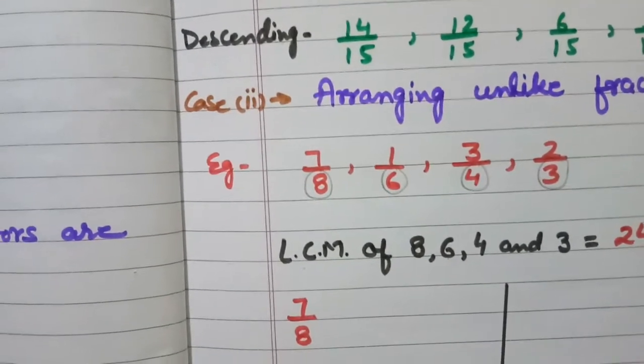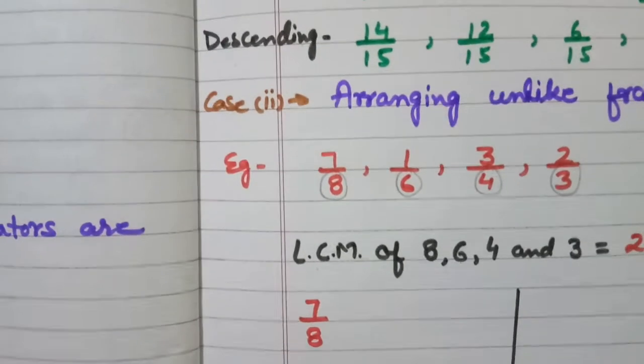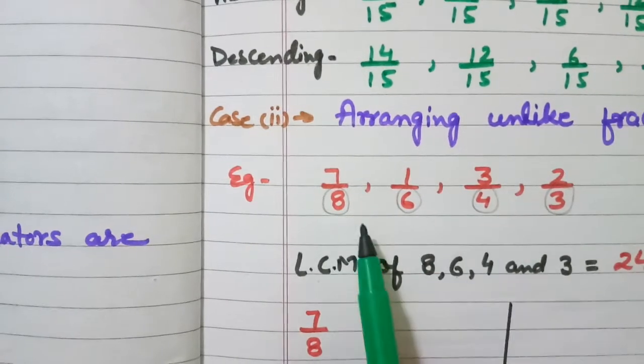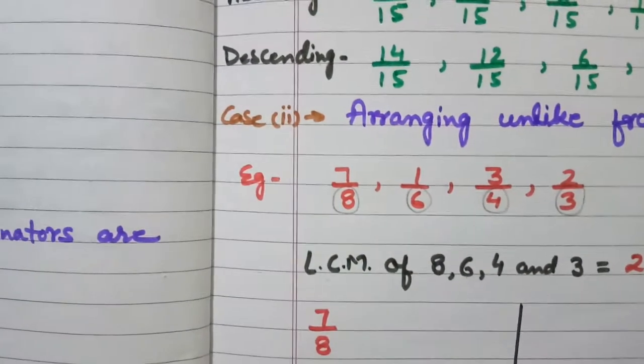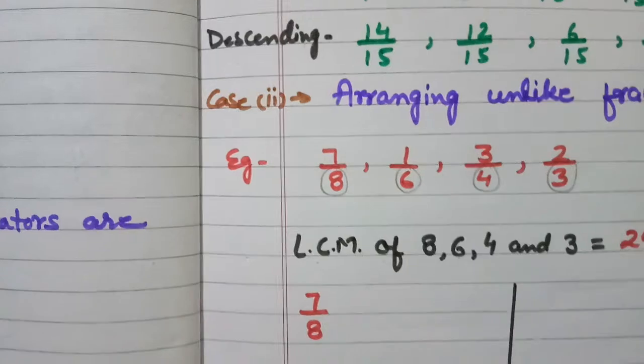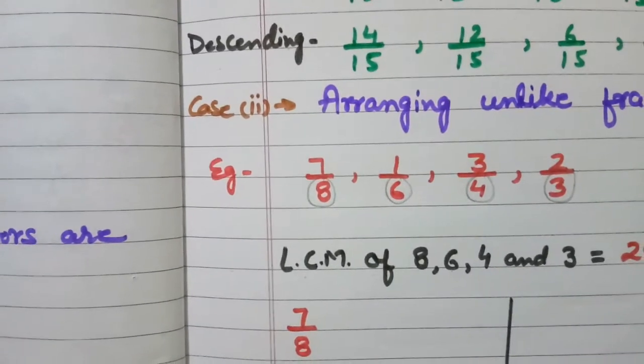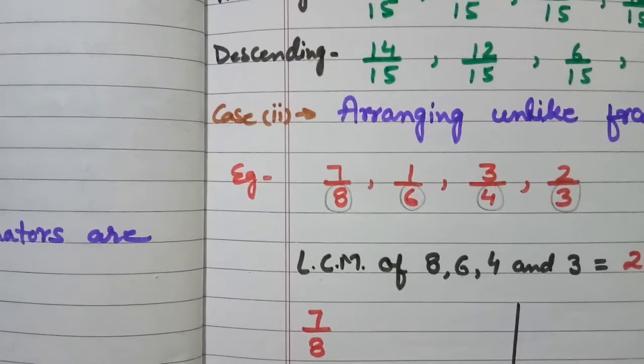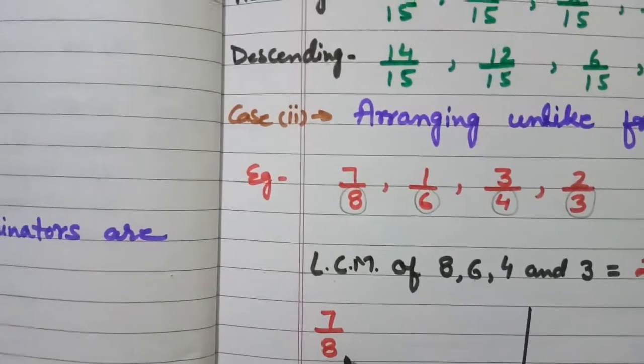After finding the LCM, what are you going to do? You have to make the fractions, make the given fractions or convert the given fractions into like fractions. How can we do that? By converting their denominators or by making their denominators same.